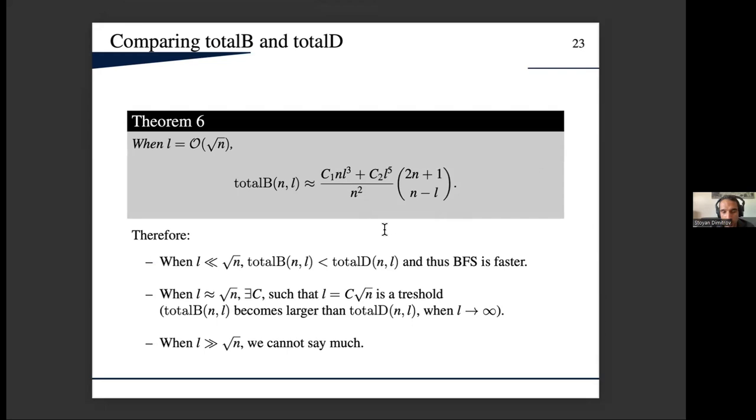As a result, we concluded that when l is asymptotically smaller than root n, then BFS is faster in expectation. In addition, for some positive constant c, we have a threshold at c root n, so there DFS became better. However, when l is asymptotically larger than root n, we cannot say much using these tools.